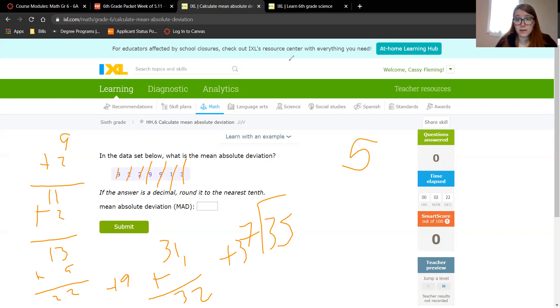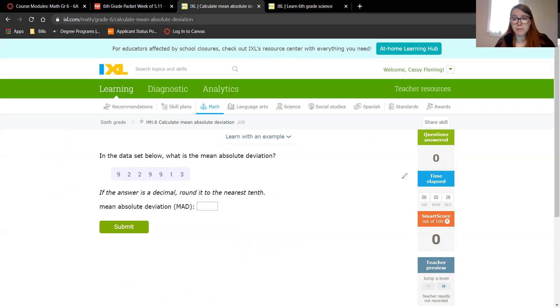But we are not done yet. Now we have to take each number and subtract 5 from it. So 9 minus 5, 2 minus 5, 2 minus 5, 9 minus 5, 9 minus 5, 1 minus 5, and 3 minus 5. 9 minus 5 is 4, 2 minus 5 is negative 3, negative 3, 4, 4, negative 4, and negative 2.